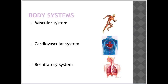The circulatory system permits blood and lymph circulation to transport nutrients to and from the cells in the body. This is to nourish the body, help it fight diseases, stabilize body temperature and pH, and to maintain homeostasis. Examples of these nutrients that may get transported are amino acids, electrolytes, oxygen, carbon dioxide, hormones, and blood cells.